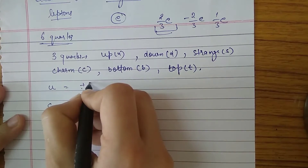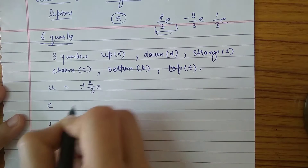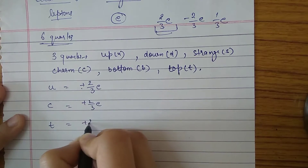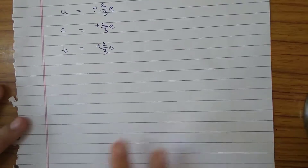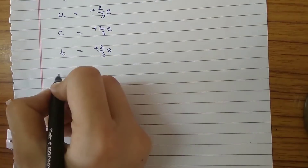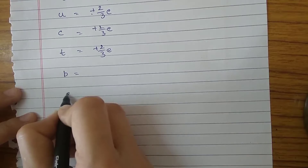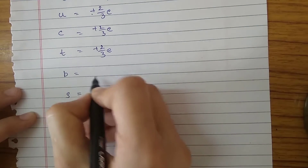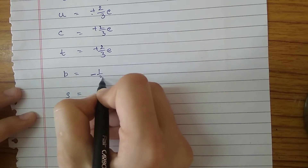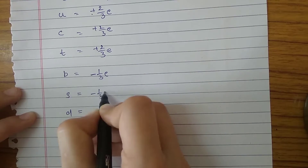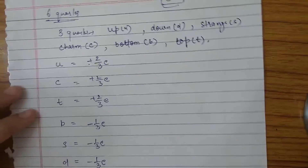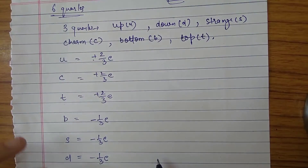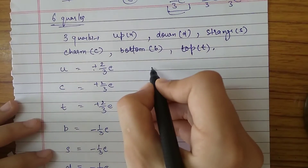The up quark, charm quark, and top quark all have positive charges of +2/3 e. The other three quarks — bottom, strange, and down — have charges of minus 1/3 e.